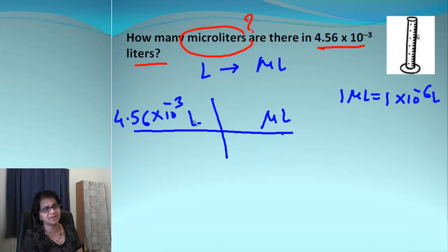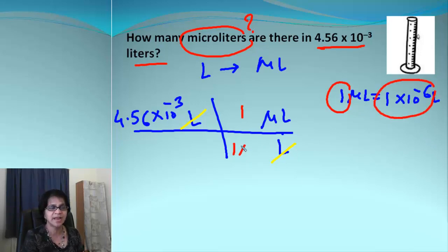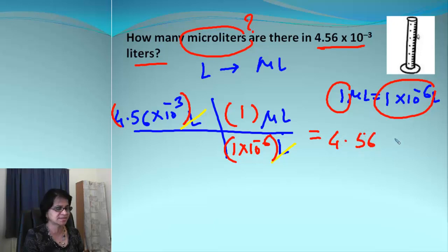Then we need to cancel liters. So liter comes over here and then you cancel the common units. But before that, we need to plug those coefficients. So we have 1 microliter here and then we have 1 times 10 to negative 6 here. So once when we cancel those units and multiply by all these numbers, what we end up getting is 4.56 times 10 to the third and our unit now is microliter.